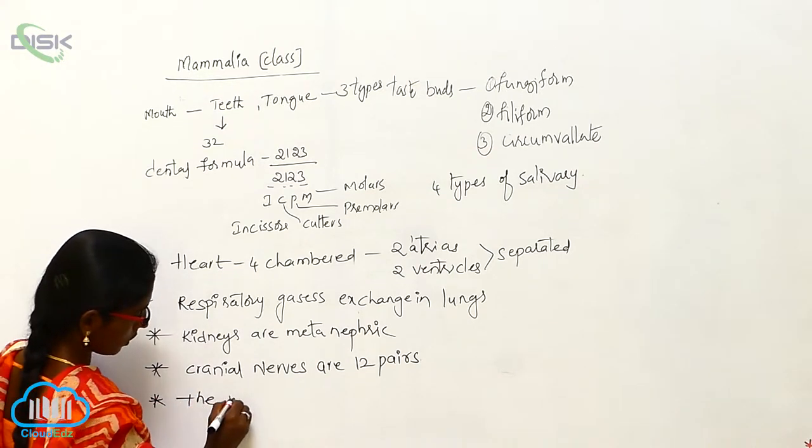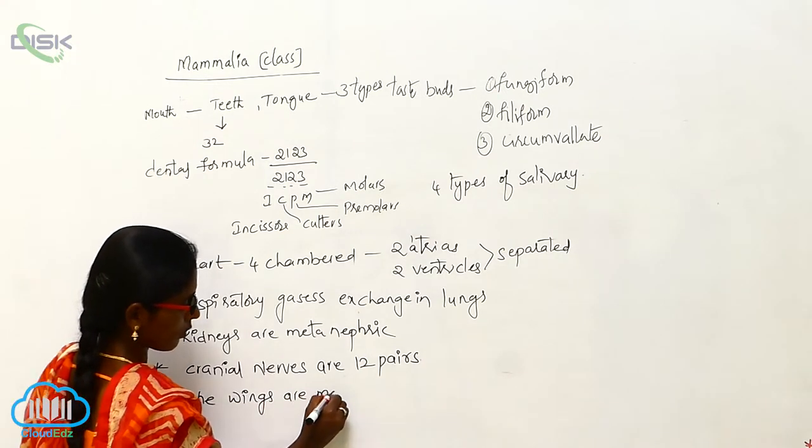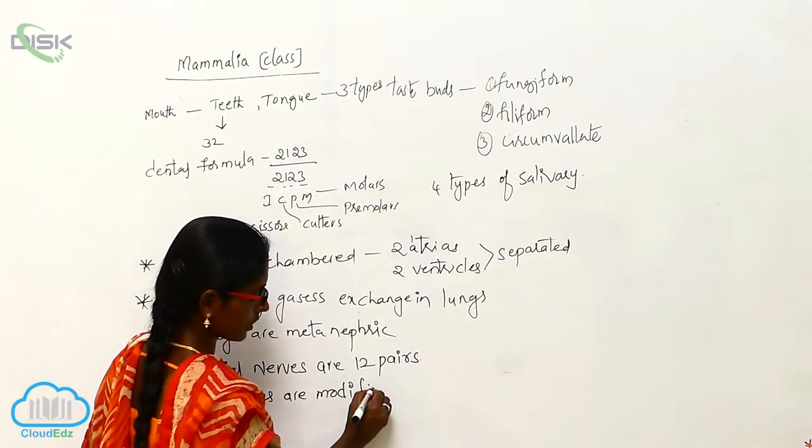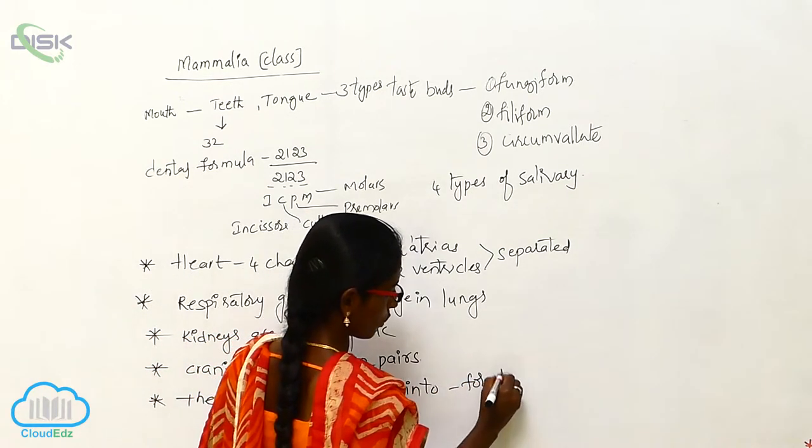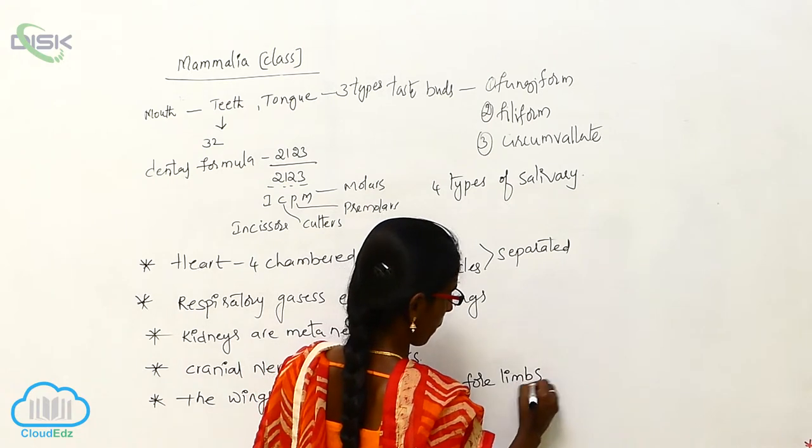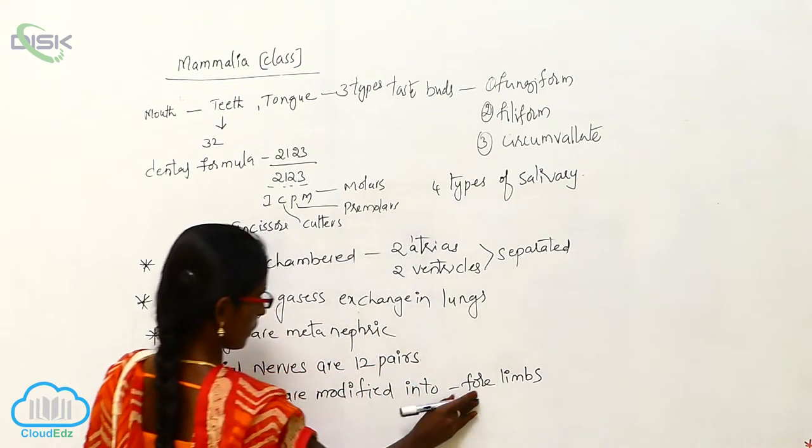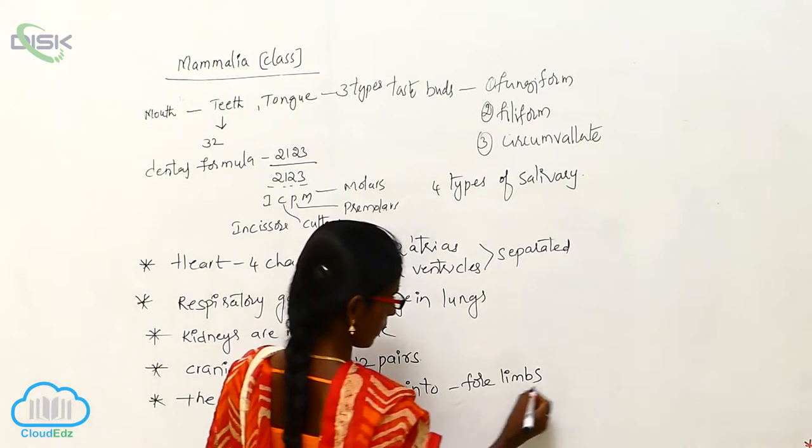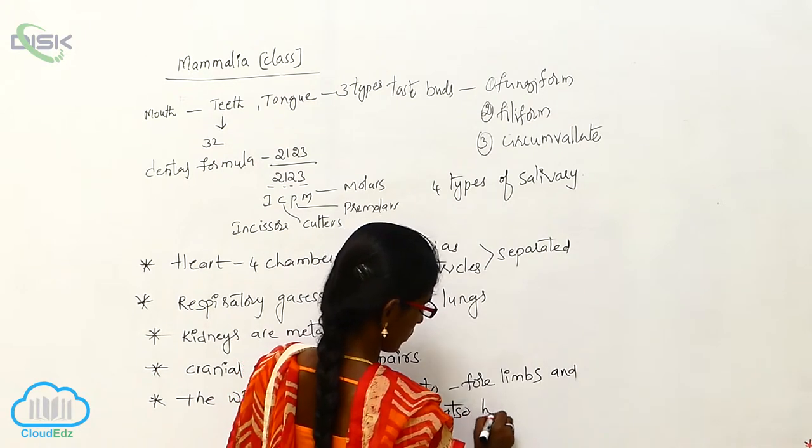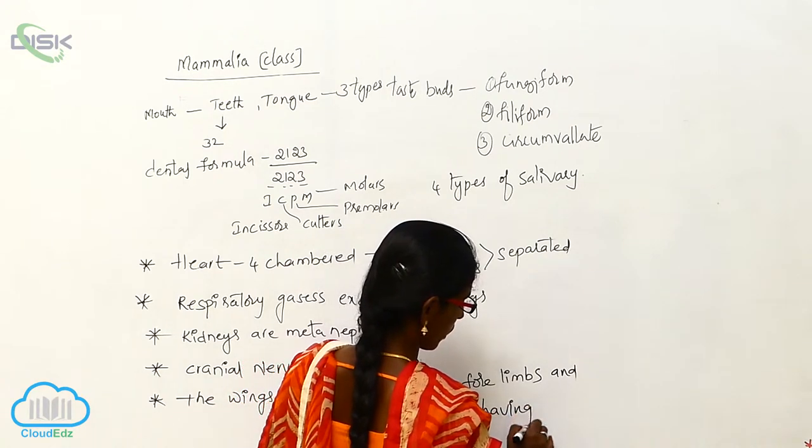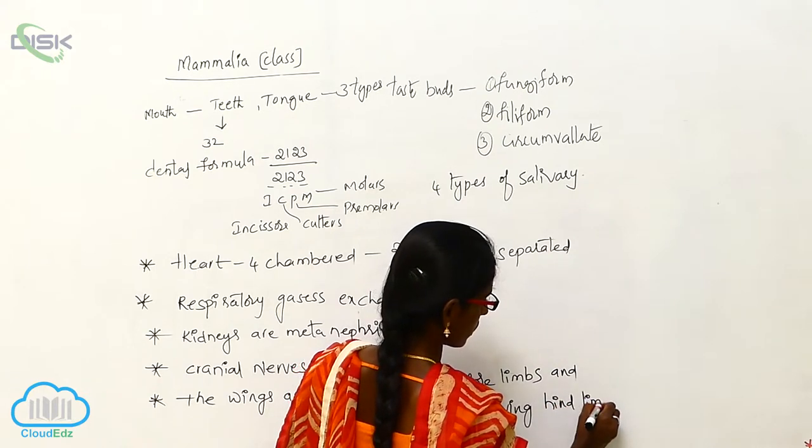The wings are modified into forelimbs and also having hind limbs.